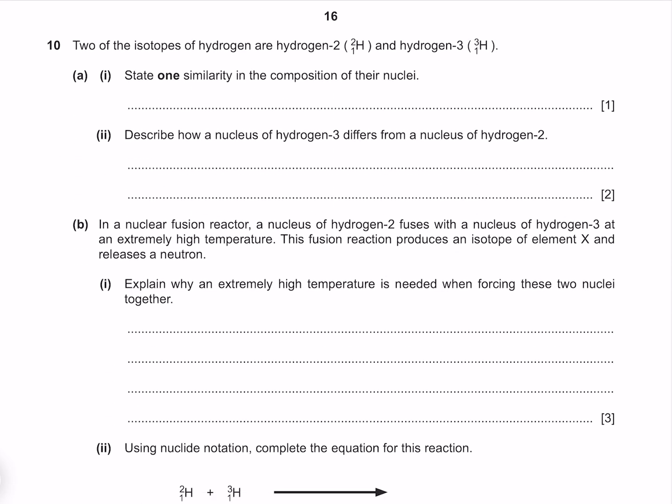Two of the isotopes of hydrogen are hydrogen-2 and hydrogen-3. State one similarity in the composition of the nuclei, which is that the number of protons is 1. Describe how a nucleus of hydrogen-3 differs from a nucleus of hydrogen-2. The difference between isotopes is the number of neutrons. Where hydrogen-2 has 1 neutron and hydrogen-3 has 2.